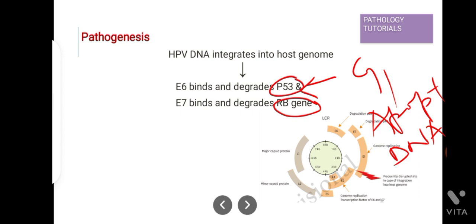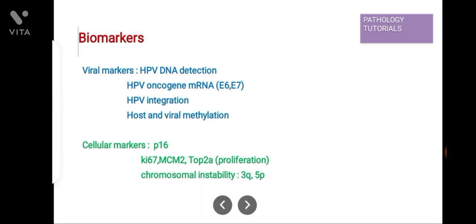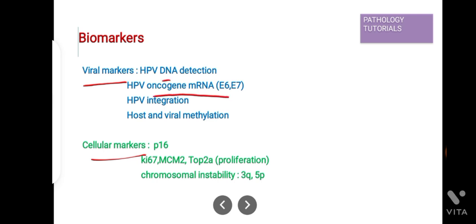E7 protein binds and degrades retinoblastoma gene products. Now coming to biomarkers — a biomarker is a measurable indicator of the presence or severity of a particular disease. The biomarkers seen in cervical cancer are divided into two types: viral markers and cellular markers. Viral markers include HPV DNA detection, HPV oncogene mRNA, E6/E7 proteins.